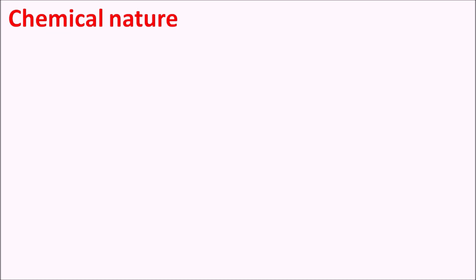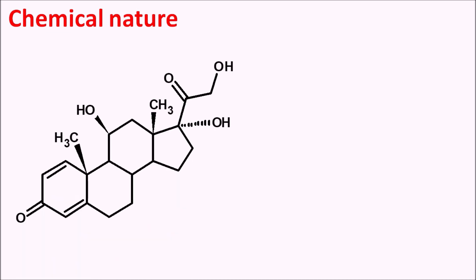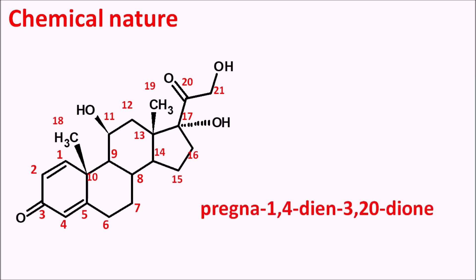Now let us see the chemical nature of this drug. This is the structure of prednisolone — we can clearly observe the steroid structure. It is having a 21-carbon steroid nucleus, which is nothing but pregnane. Prednisolone is a pregnane derivative and this pregnane nucleus has two double bonds, so it can be written as pregnane 1,4-diene, because double bonds are present at the first and fourth positions, and ketone groups are present at the third and 20th positions. Prednisolone is therefore a pregnane-1,4-diene-3,20-dione derivative.